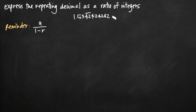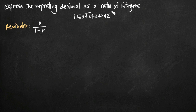This 42 keeps getting strung out. In order to express this repeating decimal as a ratio of integers, what we're going to need to do is first express this repeating decimal number as a geometric series. Then we're going to use the formula a divided by 1 minus r to find the sum of that geometric series, and that'll help us express this as a ratio of integers — just a fraction with a whole number in the numerator and a whole number in the denominator.